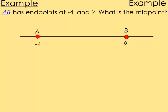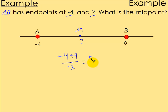Let's try some examples — look it over and pause the video. Segment AB has endpoints at negative 4 and 9. What is the midpoint? Well, just average it. The midpoint is somewhere in here — we add them up: negative 4 plus 9 divided by 2. That's positive 5 divided by 2, which is 5 halves, or 2 and a half. So our midpoint is 2 and a half. Excellent.